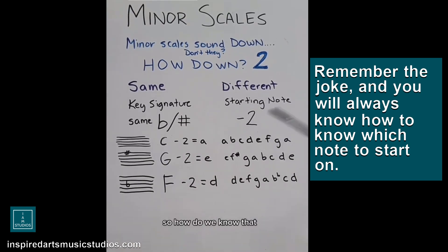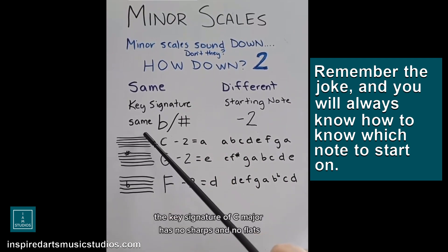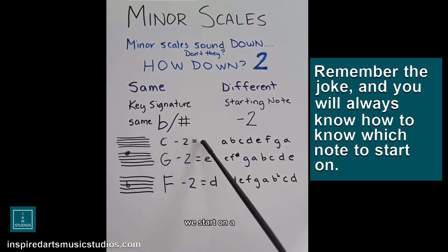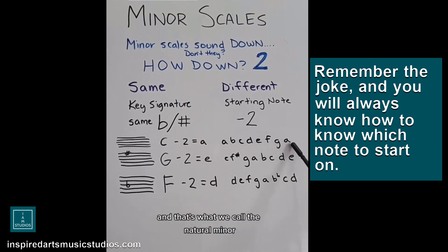So how do we know that? We can take C for an example. The key signature of C major has no sharps and no flats. But if you go C down to C B A, we start on A, and we have the same key signature as the key of C major. There's no sharps, no flats, and that's what we call the natural minor. Natural, no changes.